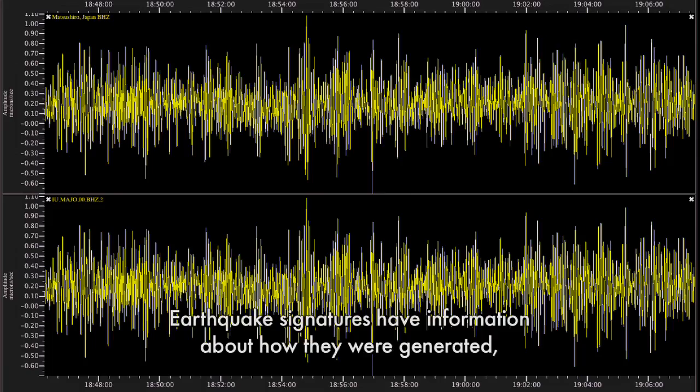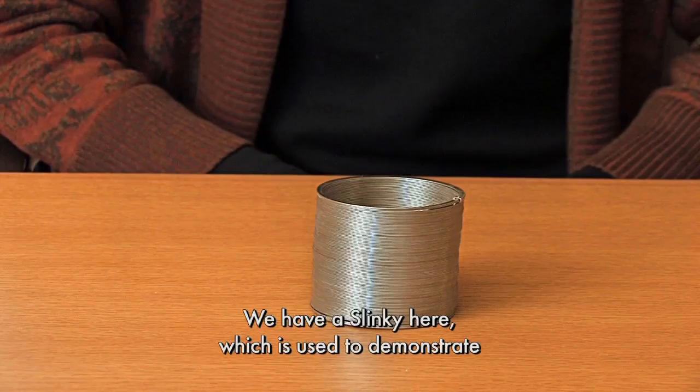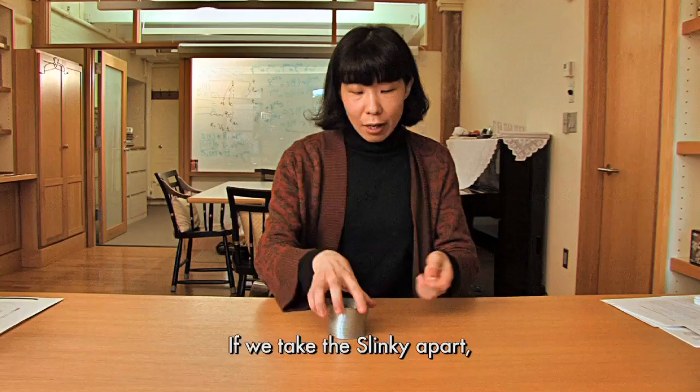Earthquake signatures have information about how they were generated, as well as the material that they traveled through. We have a slinky here, which is used to demonstrate the different types of seismic waves that propagate through the Earth interior.